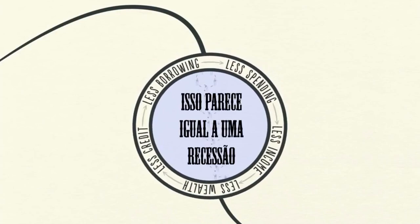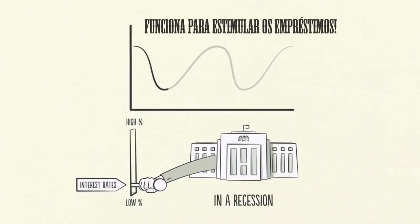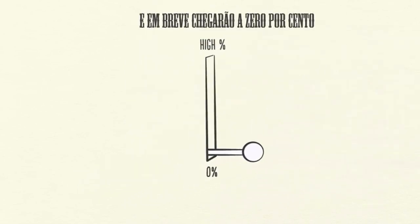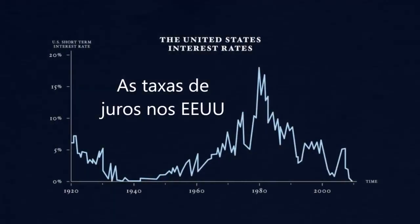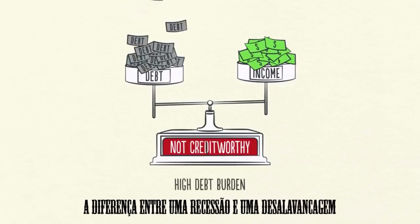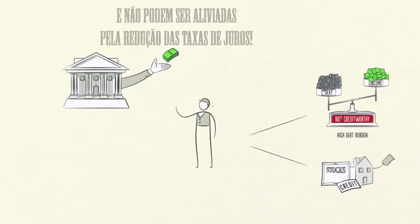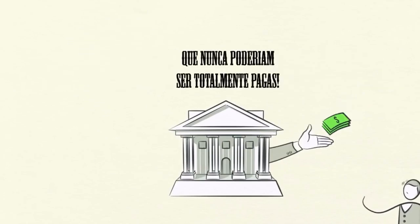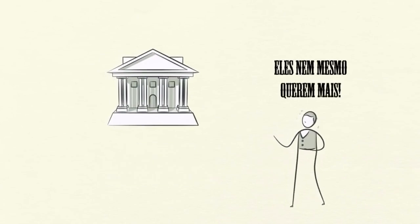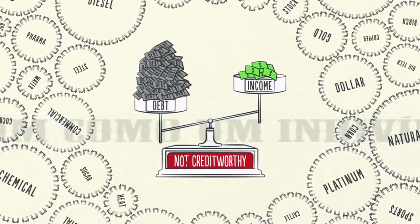It's a vicious cycle. This appears similar to a recession, but the difference is that interest rates can't be lowered to save the day. In a recession, lowering interest rates works to stimulate borrowing. However, in a deleveraging, lowering interest rates doesn't work because interest rates are already low and soon hit 0%, so the stimulation ends. Interest rates in the United States hit 0% during the deleveraging of the 1930s and again in 2008. In a deleveraging, borrowers' debt burdens have simply gotten too big and can't be relieved by lowering interest rates. Lenders realize that debts have become too large to ever be fully paid back. Lenders stop lending. Borrowers stop borrowing.